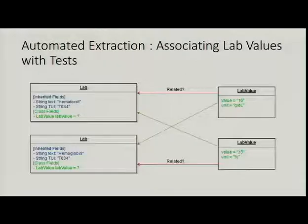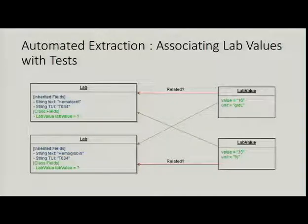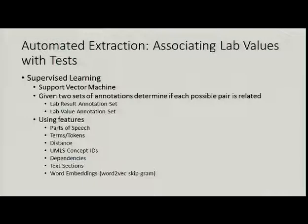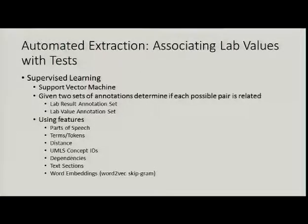Once we have a set of lab values, we must relate them back to the lab results. In the previous example, we had two labs — hematocrit and hemoglobin — but we don't know which of the two values (16 grams per deciliter and 35%) is associated with which. To accomplish this, we will use supervised learning via a support vector machine, which classifies whether each possible pair of lab result and lab value within a document is actually related. We'll use various features provided through cTAKES: parts of speech, terms and tokens, distance between the two, UMLS concept IDs for lab results, dependency tree, text sections, and word embeddings.